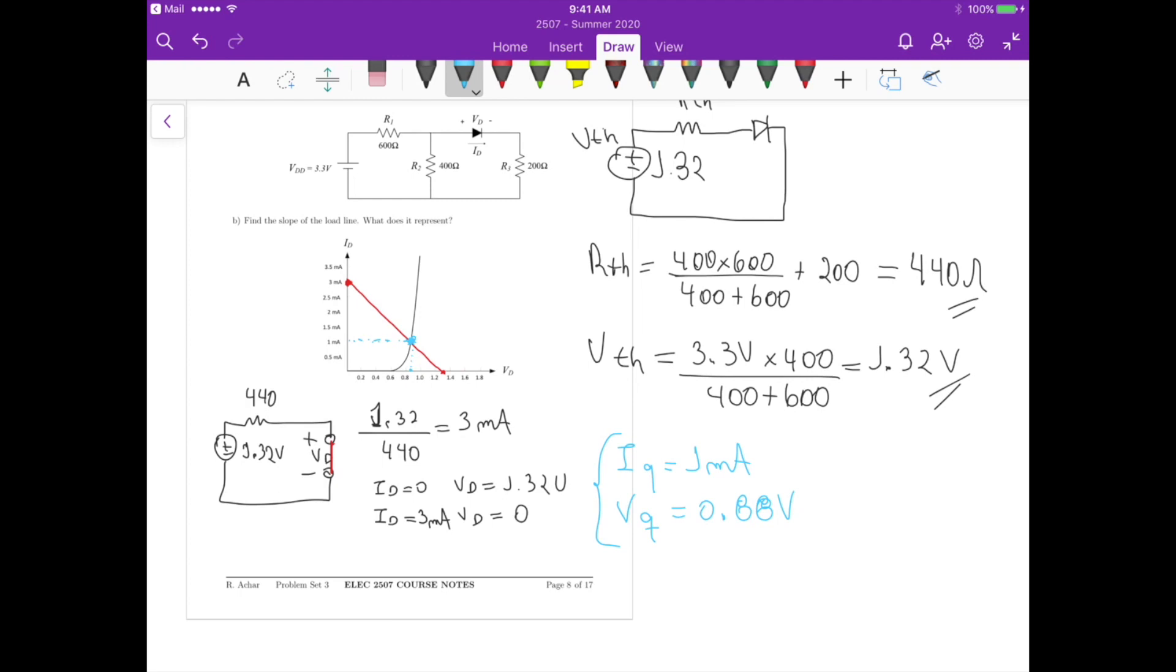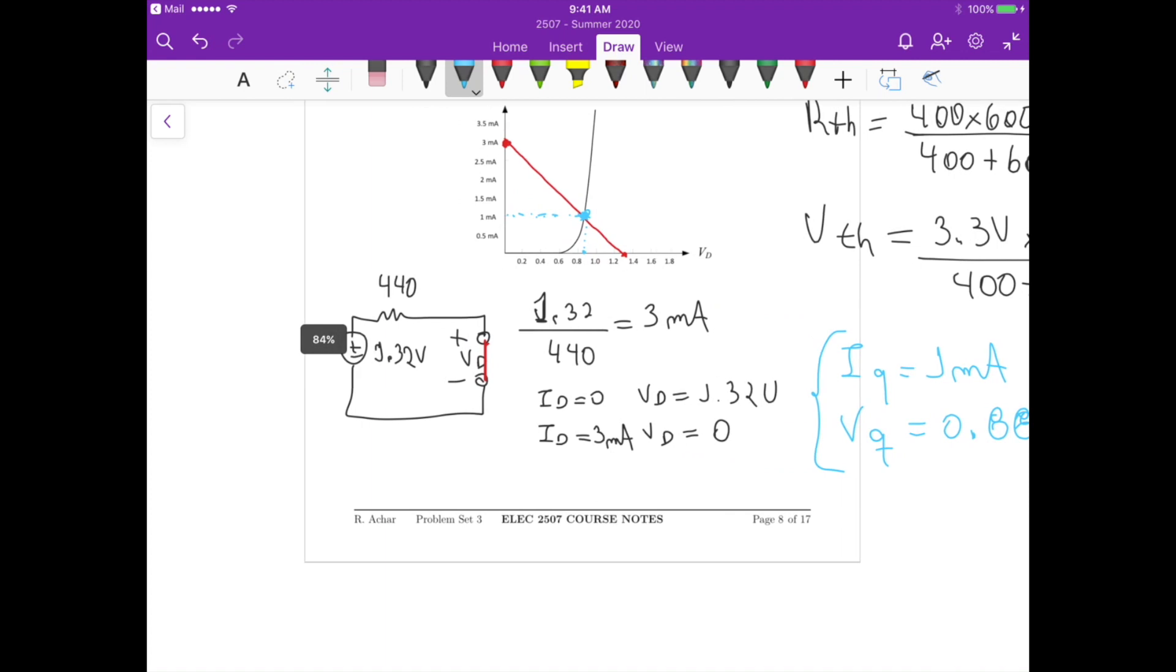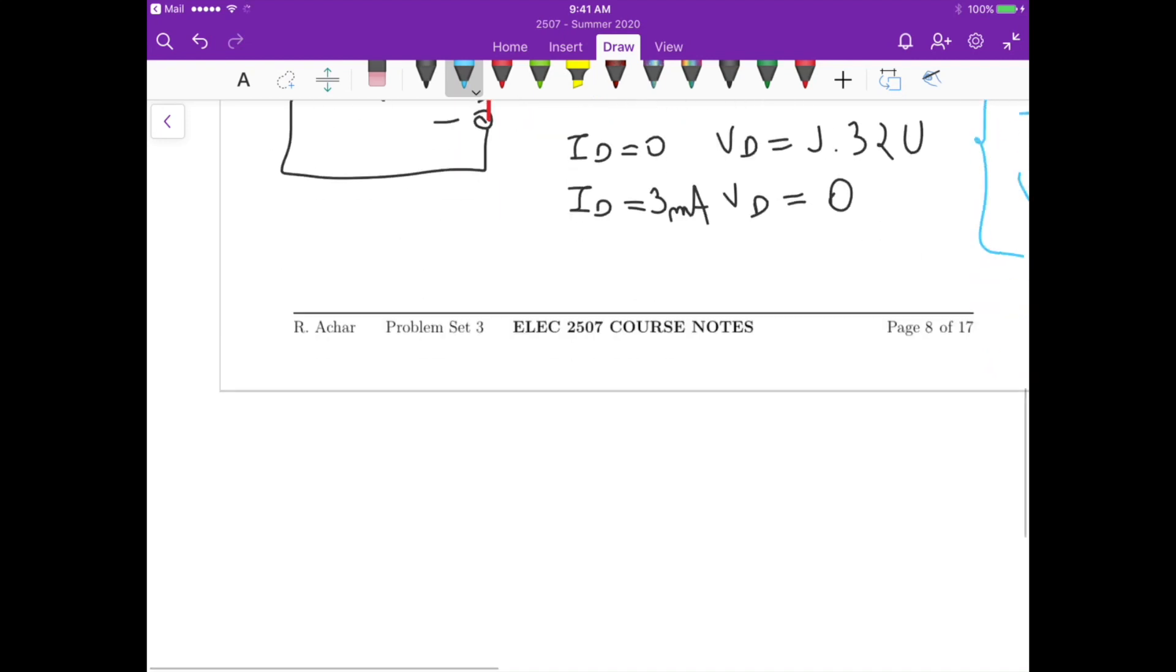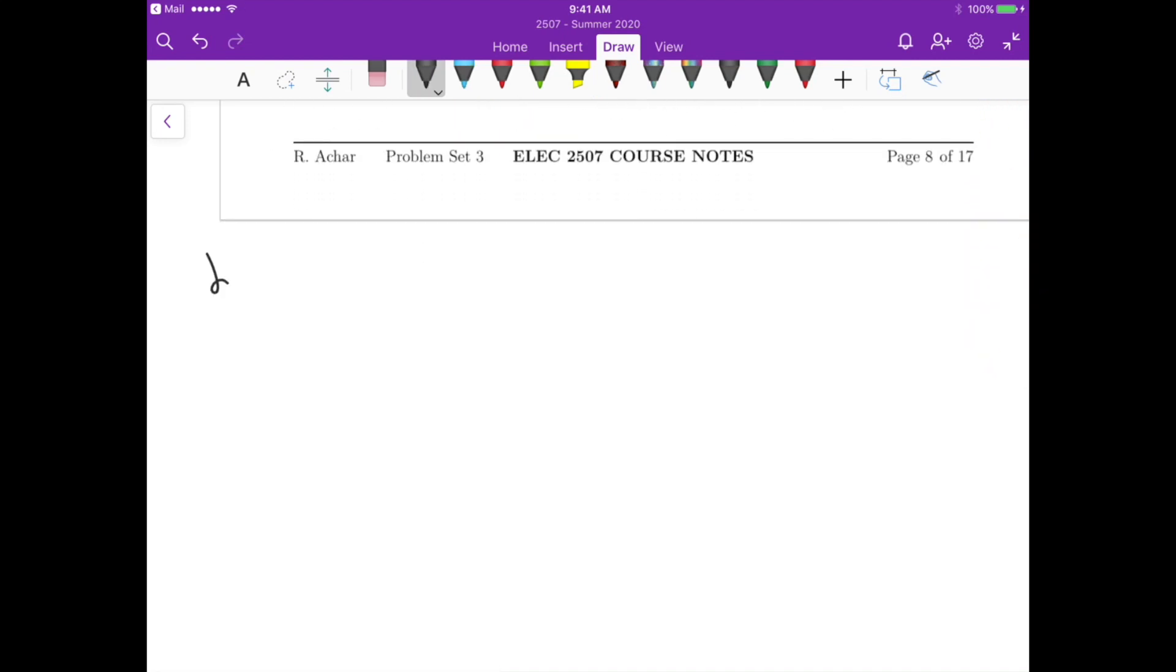Now find the slope of the load line. For the slope of the load line, if we analyze this circuit here again, the circuit that we have here. Let's say, let me redraw the circuit. So for part B, let me redraw here. And then let's say the diode here has some built-in voltage. So this is VTH, this is RTH, and this is VD.